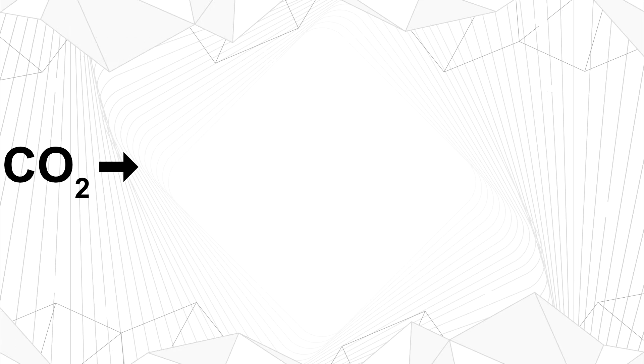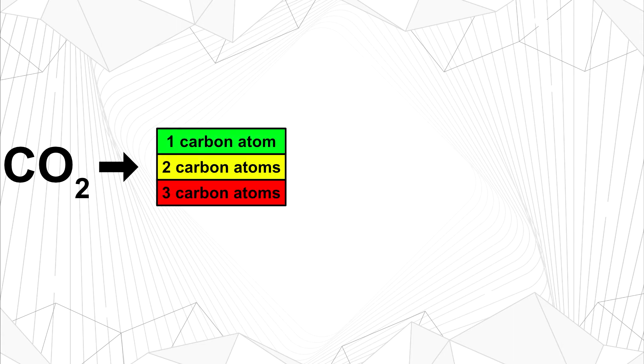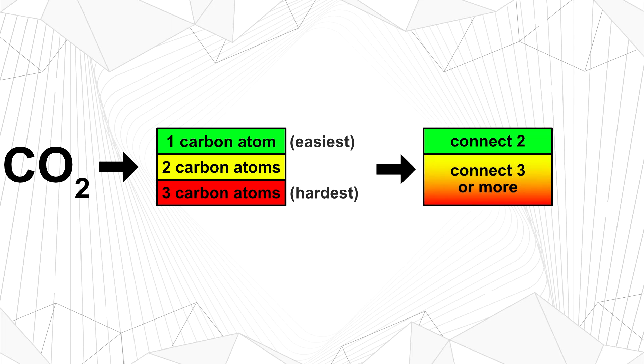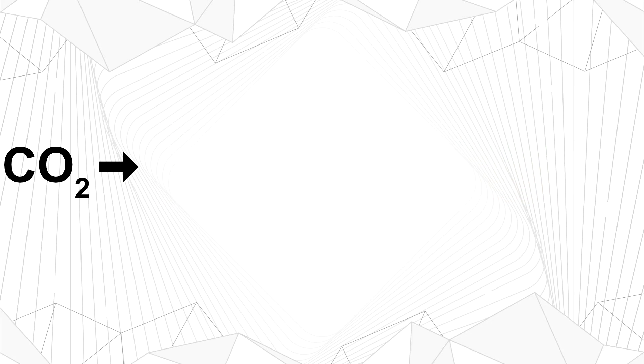During the first step we can produce alcohols or aldehydes with either one, two or three carbon atoms. The rule here is that larger molecules are more difficult to produce. During the second step we can connect two of these, but we could also attempt to connect three or more. But here too, the rule is, the greater the number, the harder it becomes. For higher energy densities and other fuel characteristics, however, we want large molecules. This puts us in a position where we need to carefully choose a pathway that is reasonably easy to execute while also resulting in reasonably large molecules. After looking into this for quite some time, the choice that I think makes probably the most sense is to go with two carbon molecules during the first step and connect two of them together during the second one. Specifically, we want to produce ethanol and connect two of these molecules to form butanol.